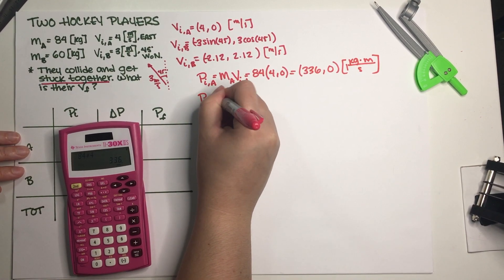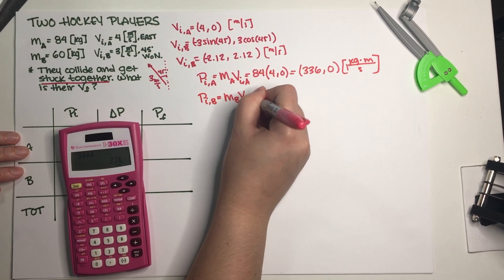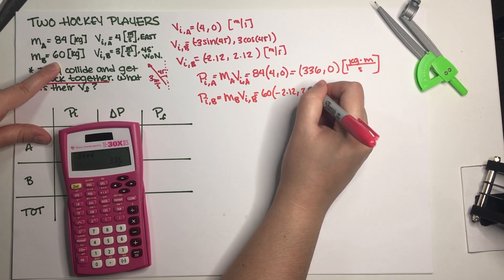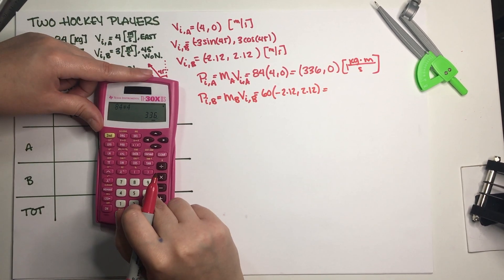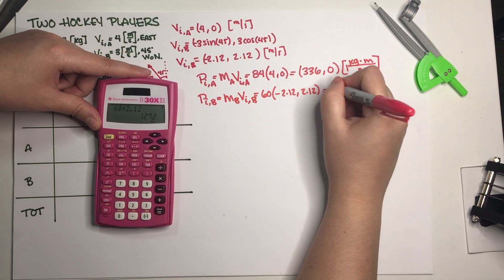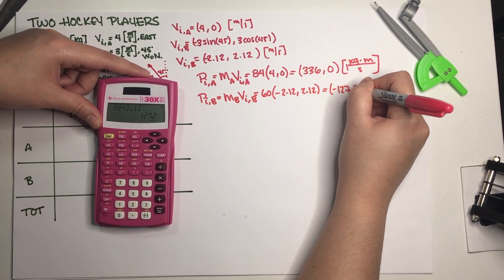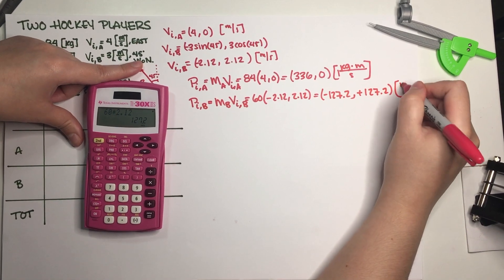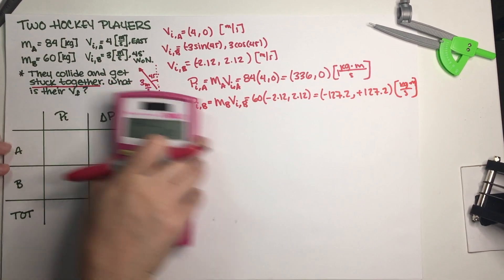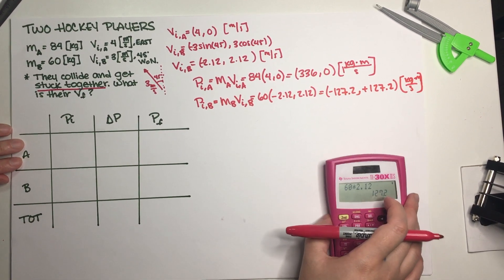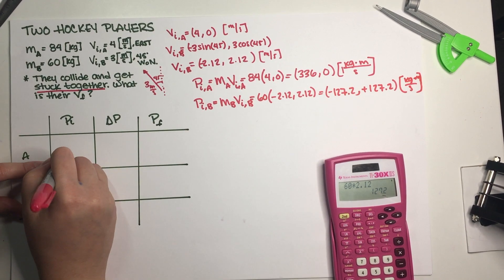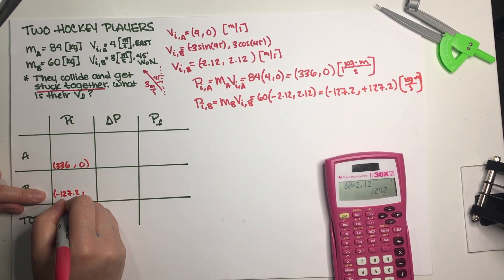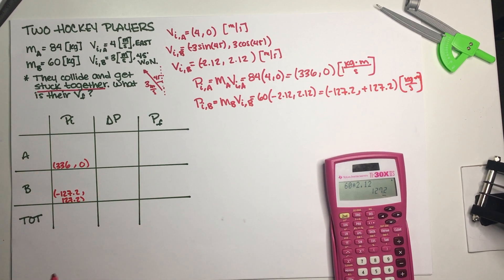For B we do exactly the same: mass B times velocity initial B. B's mass is 60 kilograms, so we have 60 times negative 2.12 and 60 times positive 2.12. That gives negative 127.2 and positive 127.2 kilogram meters per second. So for A we have (336, 0) and for B we have (−127.2, +127.2).